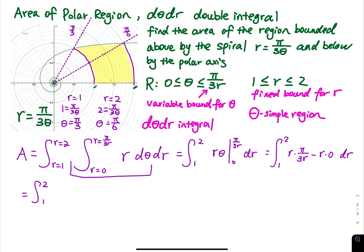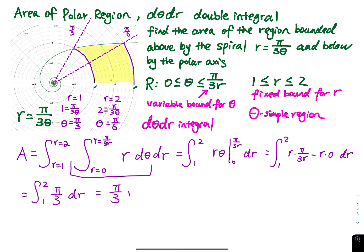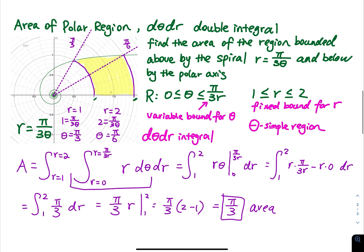Since the r's cancel, pi over 3 is just a constant. Integrating from 1 to 2 gives pi over 3 times r evaluated from 1 to 2, which equals pi over 3 times (2 minus 1) equals pi over 3. So the area of the shaded region is pi over 3.